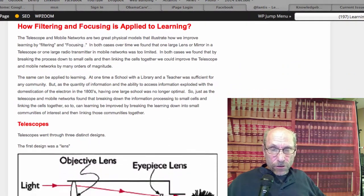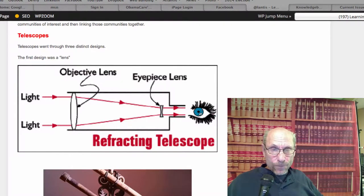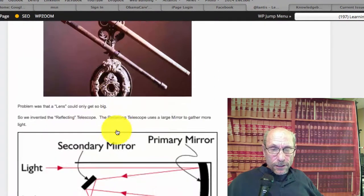I've got some pictures of the telescope here that I think is cool. That was, I think, Galileo's telescope. It uses the lens. And then when that could only get so big, they went to a mirror.